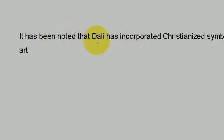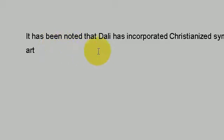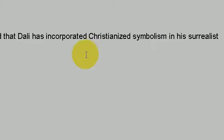Now if I go back into Microsoft Word, I want to incorporate a reference to back up this assertion. It has been noted that Dali has incorporated Christianized symbolism in his surrealist art. That's an assertion that I've made and now I want to cite the location of a reference — I want to basically cite that fact.